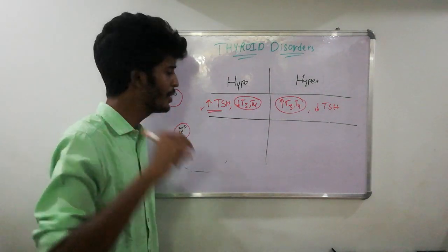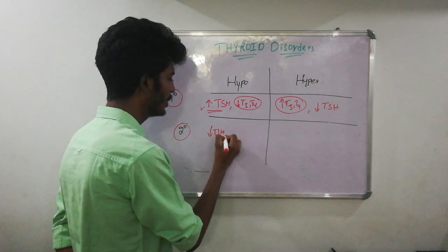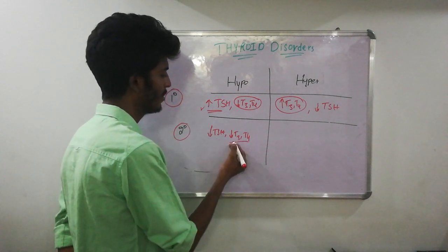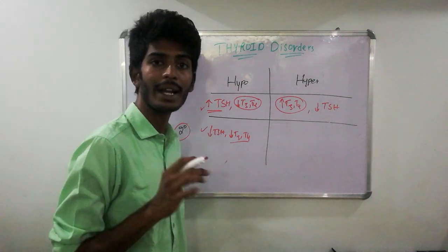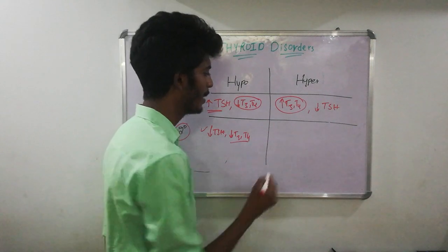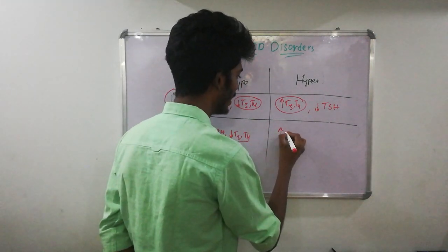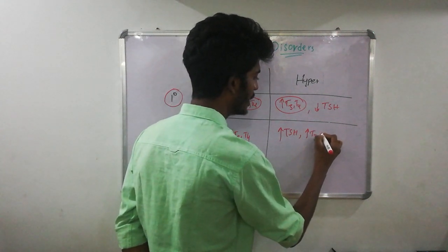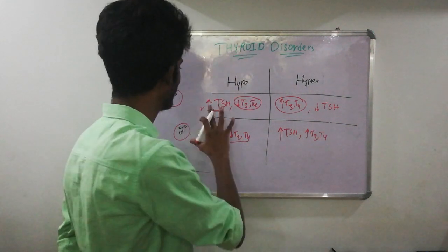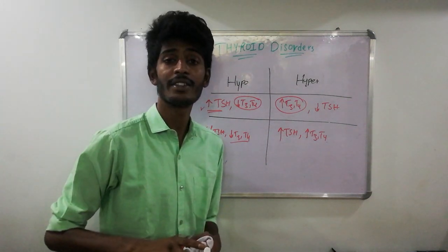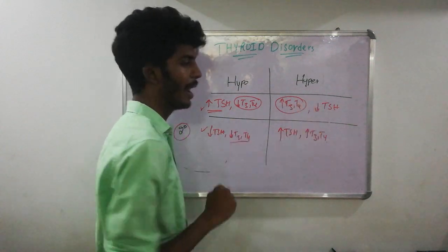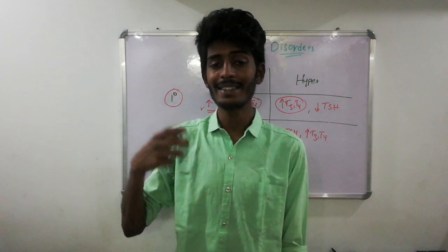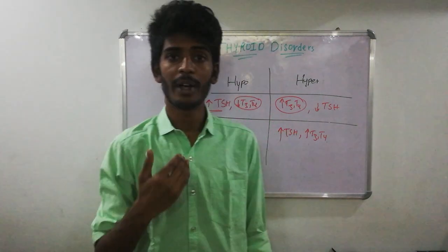In secondary hypothyroidism, the problem is in the pituitary — there is no TSH, which leads to decreased T3 and T4, while the thyroid gland itself is fine. This classification table is very important: knowing how to interpret TSH, T3, and T4 levels allows us to diagnose whether a patient has primary or secondary hyper- or hypothyroidism. This is the key differentiating factor between primary and secondary disorders.